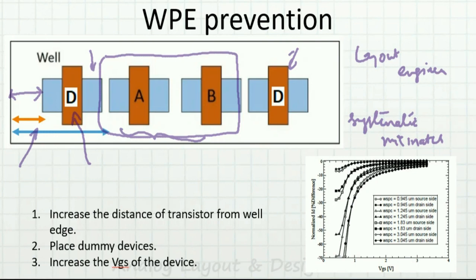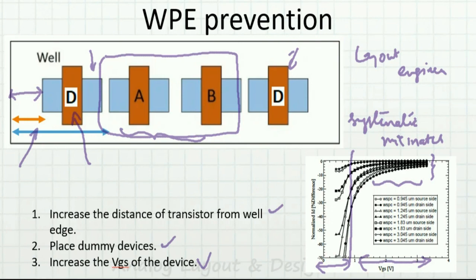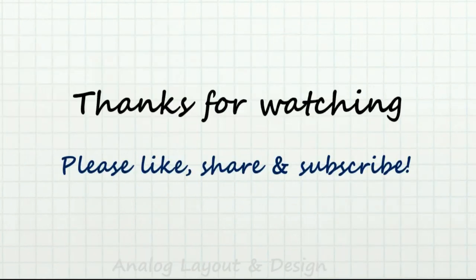One more way to prevent the well proximity effect is by increasing Vgs of the current mirror devices. At higher Vgs, there is little visible variation in threshold voltage, whereas at lower Vgs the difference between devices is significant. Thanks for watching. In this video we discussed the well proximity effect and how to prevent it. If you liked the video, please hit the like button and don't forget to share and subscribe.